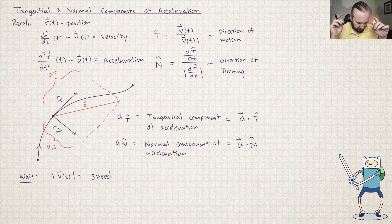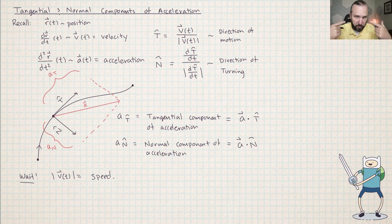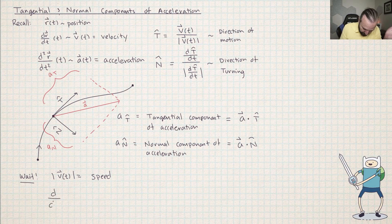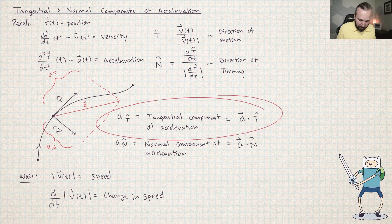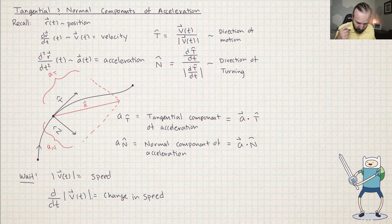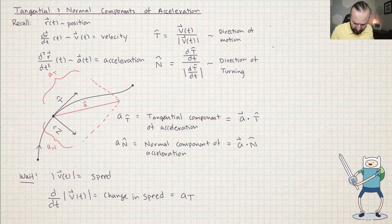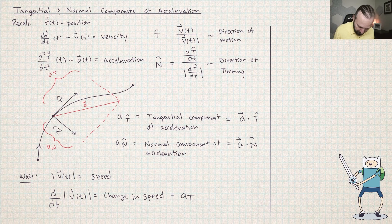This is actually pretty obvious: what we're trying to calculate with a sub T is how much the speed is changing. The magnitude of the velocity is the speed, so the derivative of the magnitude of the velocity is a sub T — that's the change in speed. This is brilliant because T and N are sometimes a hassle to calculate. So I just have to take one derivative, find its magnitude, take another derivative, and that gives me how much of the acceleration comes from speeding up or slowing down.